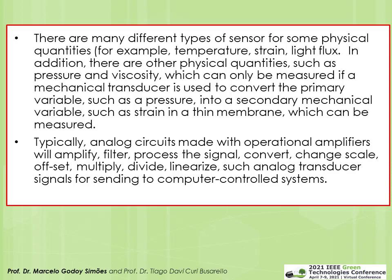There are several types of sensors for physical quantities such as temperature, strain, light flux, pressure, and viscosity. A mechanical transducer converts primary variables such as pressure or strain into variations, which are then processed with an analog-to-digital converter. Analog circuits are typically designed based on operational amplifiers, which provide signal processing, filtering, multiplication, linearization, scaling, and offset adjustment. Analog transducers are interfaced initially before entering a computer-controlled system.